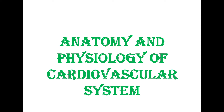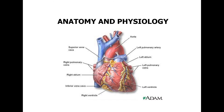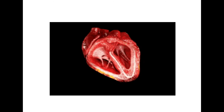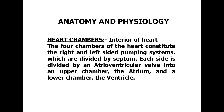Today we will discuss the remaining topic of anatomy and physiology of the cardiovascular system. In the human heart, there are four chambers — right atrium, right ventricle, left atrium, and left ventricle. Next, we will discuss regarding the valves.